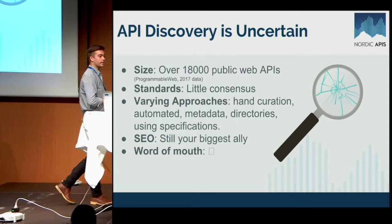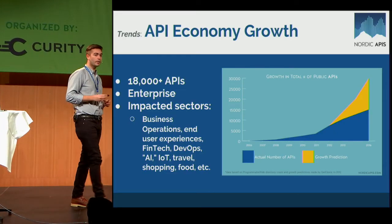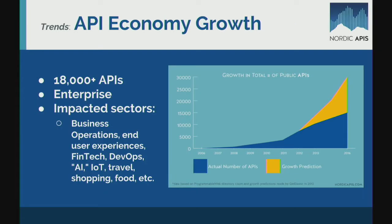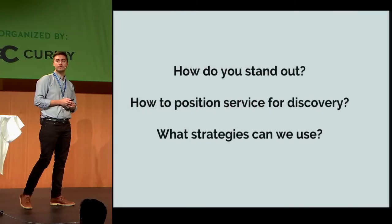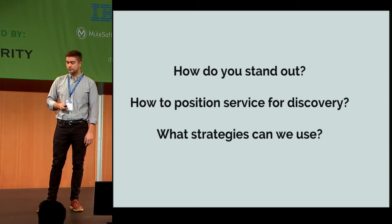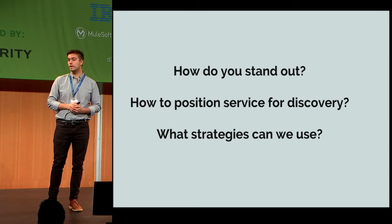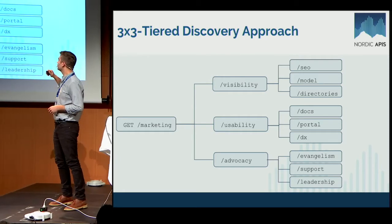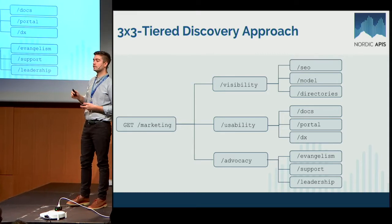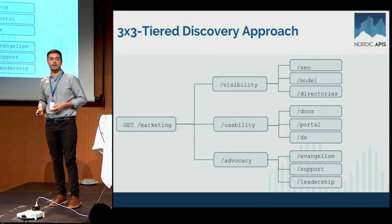Word of mouth is a great tool, but it's hard to judge. I think this is going to become more and more of a pressing concern with the growth of the industry. We're at 18,000 public APIs currently, but with open banking, advances in artificial intelligence, and other sectors like travel, shopping, and e-commerce, I think we're going to see a lot more saturation of really niche API groups. So if you are offering a public service, how do you stand out amongst the competition and position your service for discovery? I want to talk about strategies using a three-by-three tier discovery approach: increasing visibility, usability, and advocacy.